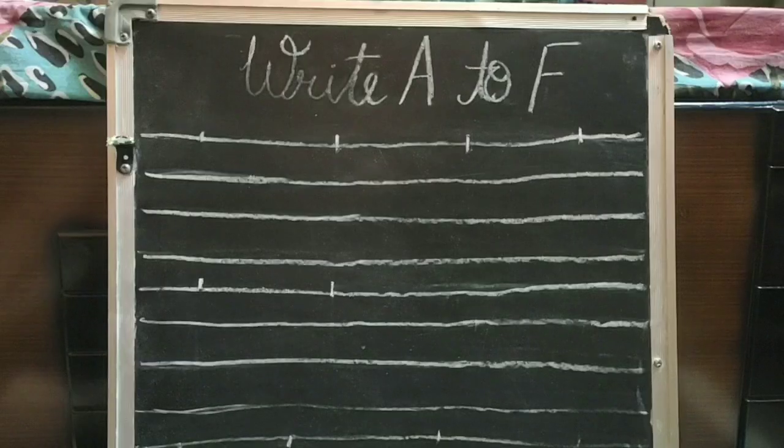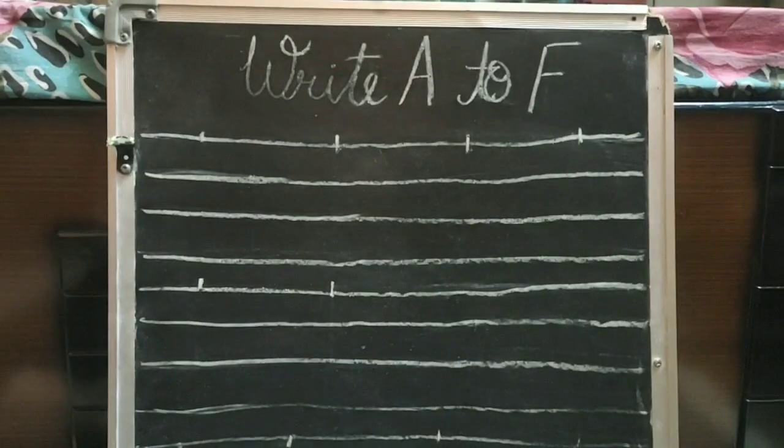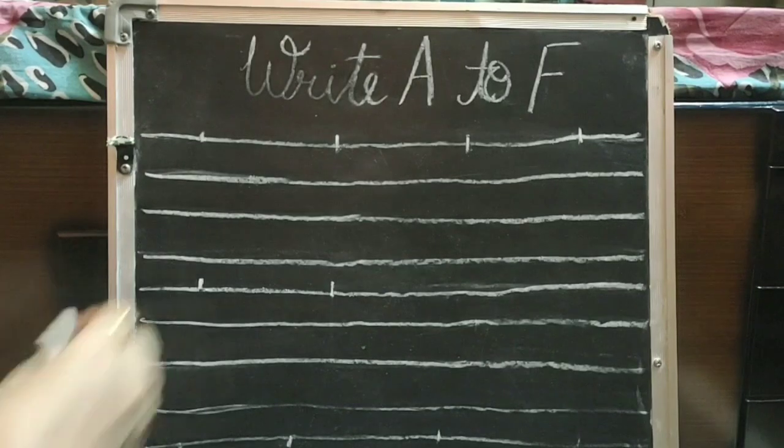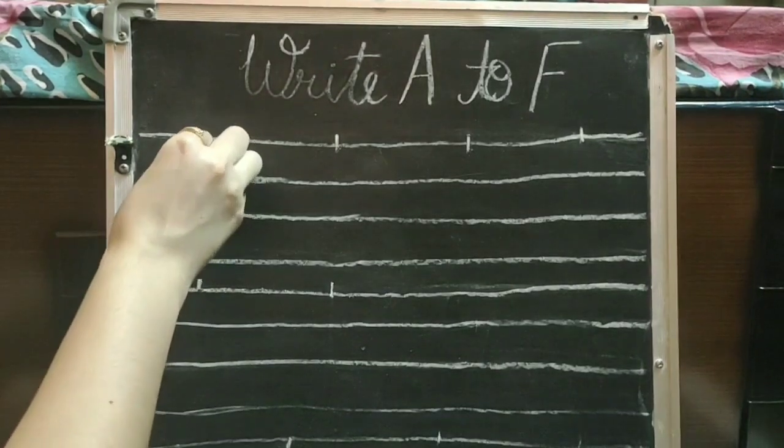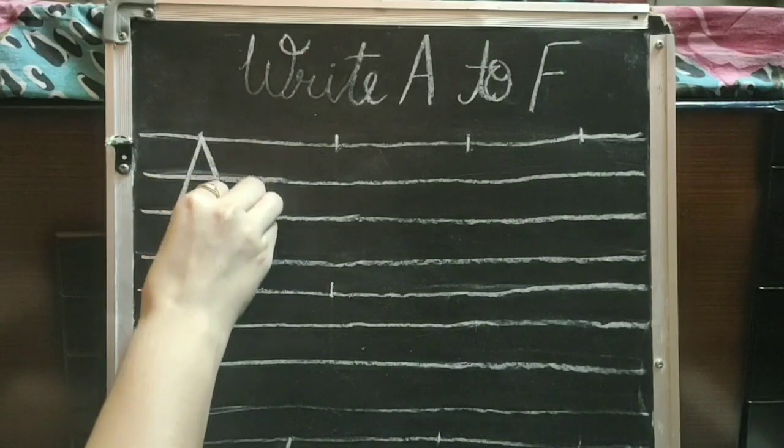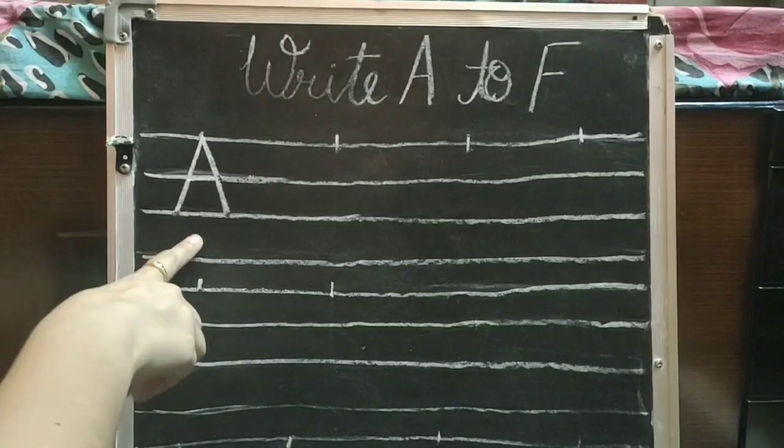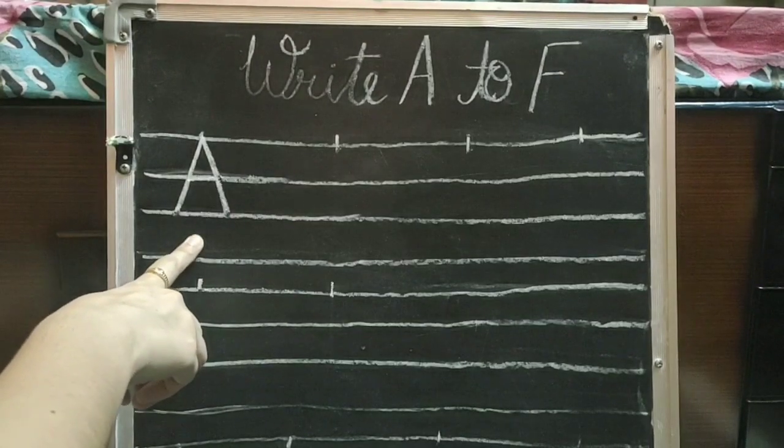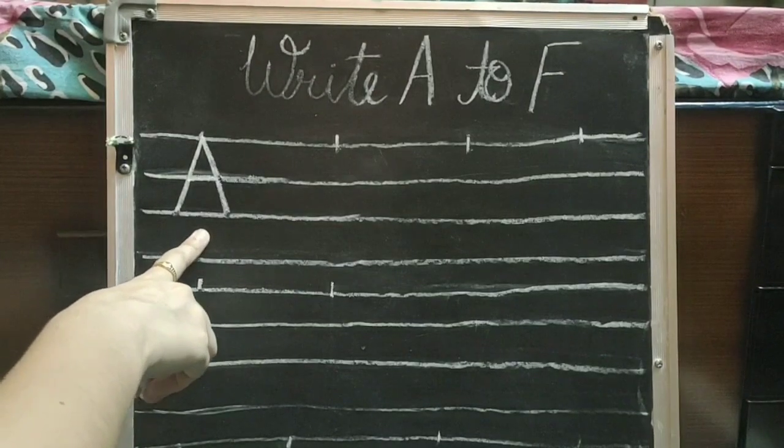Let's write A to F. Start from B. Now make slanting line. Another slanting line. A for apple.